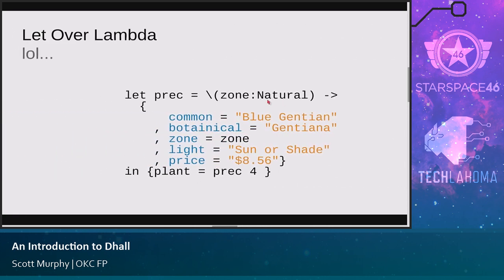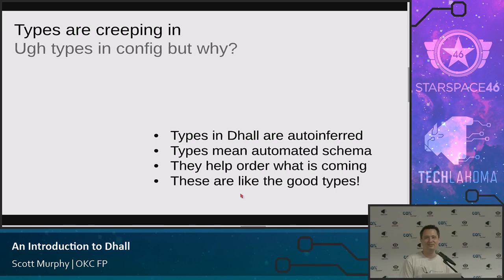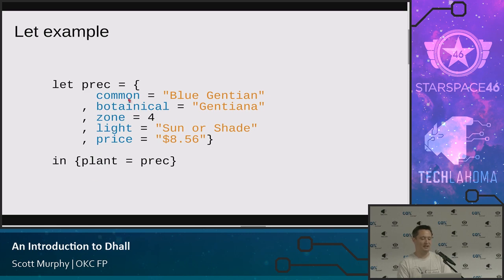One thing to notice here — we're already starting to see types. People's reactions are different when they see types. My reaction is very happy, knowing that things are going to be easy to figure out. So why would you want types in a config language? I think the biggest argument is it means you have a built-in schema. The word schema doesn't quite mean the same thing as types, but they serve the purpose really well in Dhall. Types help you order and understand what's happening in your code. And these are the good types — the Haskell and Scala types, not the Java and C++ types. Also, the types in Dhall are auto-inferred, so for simple things you don't need to write the types at all.